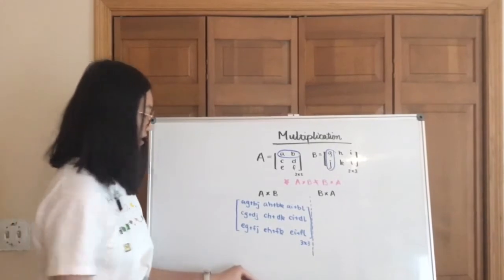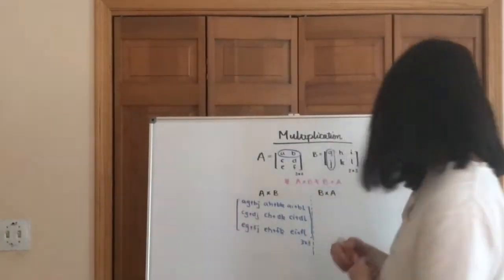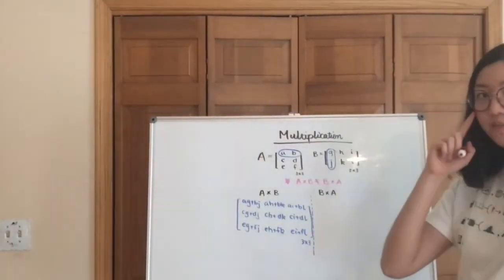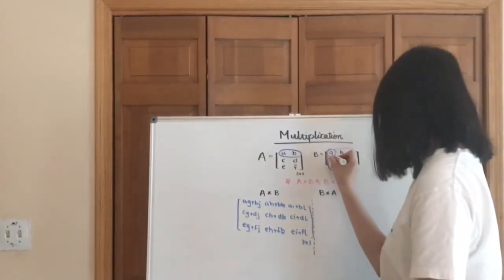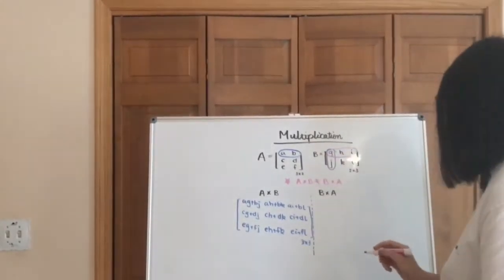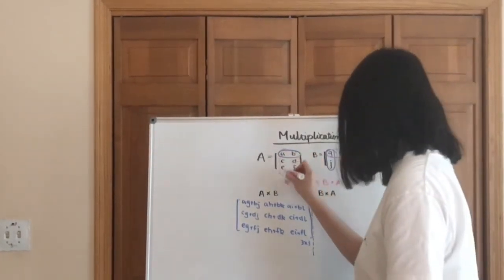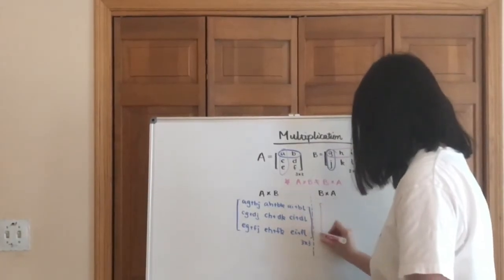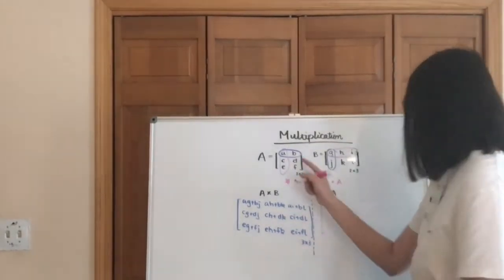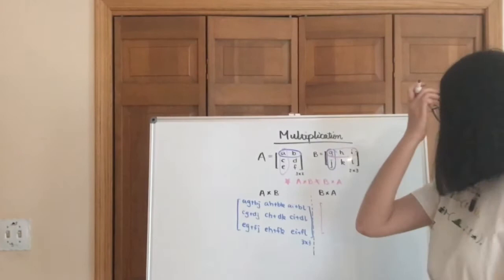Alright, and then now I'm going to show you how to do b multiplied by a. So again, because b goes first, we're going to start with the horizontal row of b and then the first column of a. So similarly, we're going to start by the dot products.